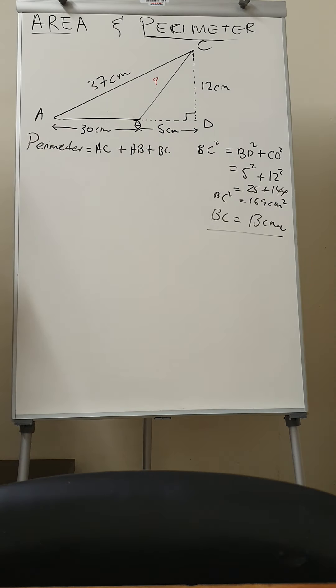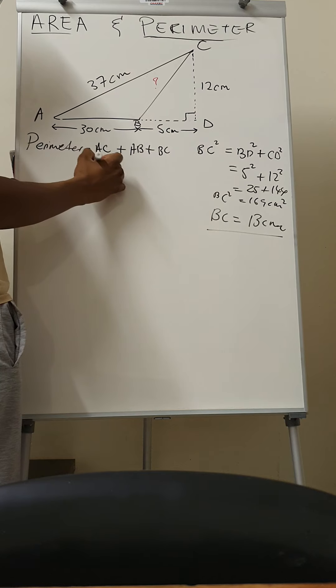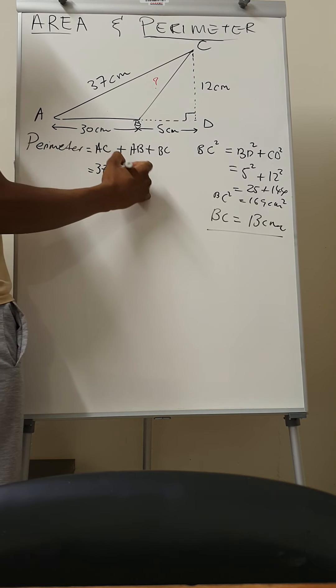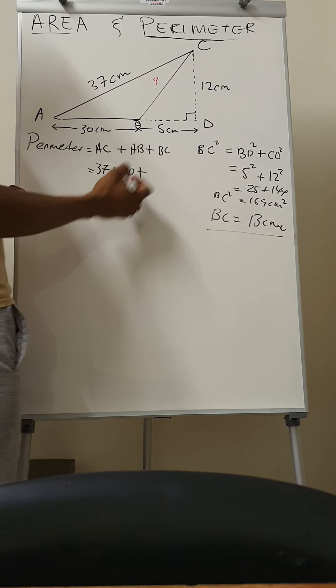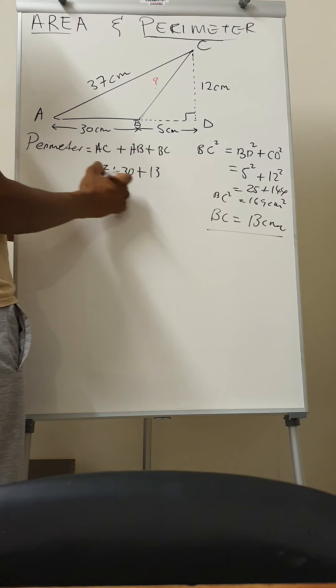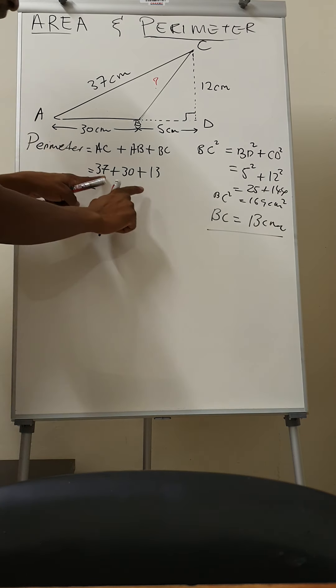Okay, so and then you come back here and substitute to 13 centimeters to our perimeter. So AC is equal to 37, AB is equal to 30, and then BC is therefore equal to 13.